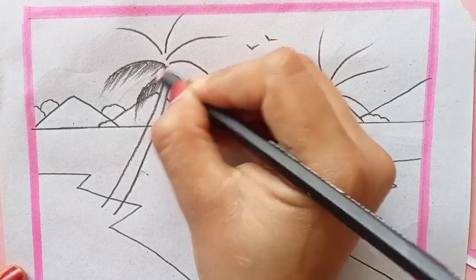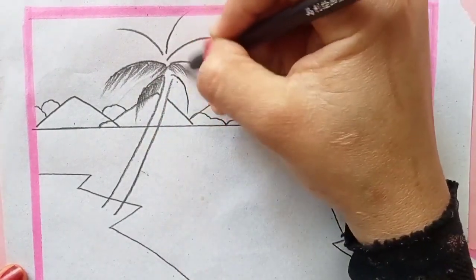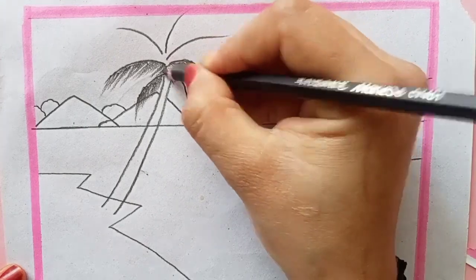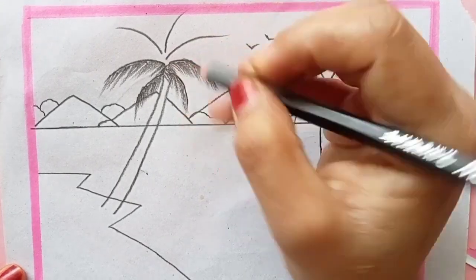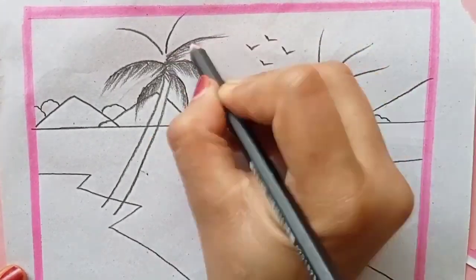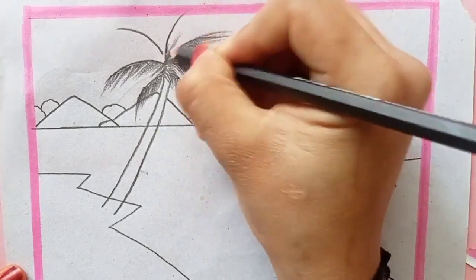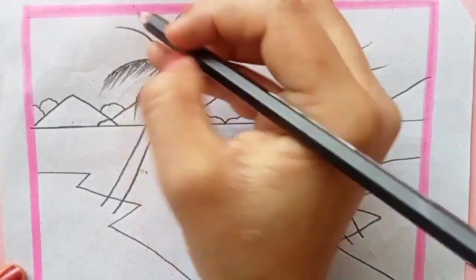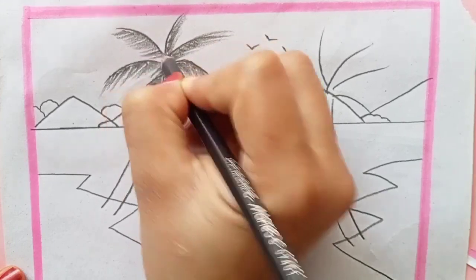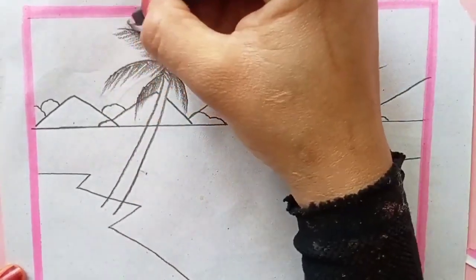Just like this and the tree is done. Our drawing is about to complete. Do not skip any of the steps and watch till the end. Now with an eraser, I am erasing the lines that had been coming between the tree barks.